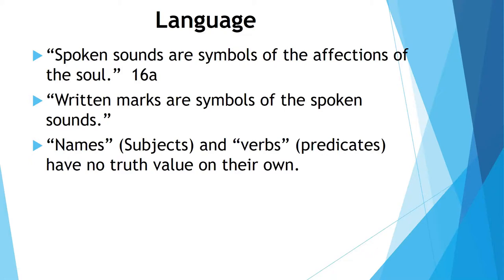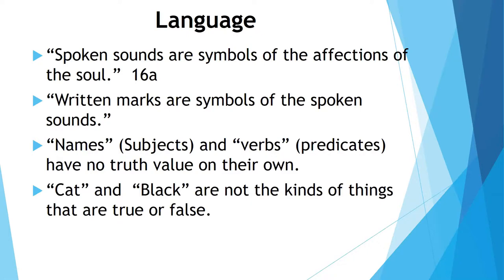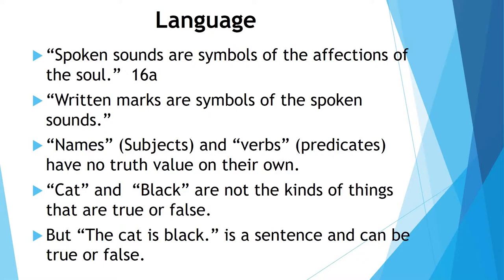Aristotle recognizes that there are two main components to our languages: names, which are subjects in sentences, and verbs, which are predicates in sentences. On their own, these individual things have no truth value. For example, 'cat' is a name or subject and it doesn't have any truth value on its own — it's not true or false. 'Black' is not the kind of thing that is true or false. But when you put them together and have the statement 'the cat is black,' that's a sentence that can be true or false.